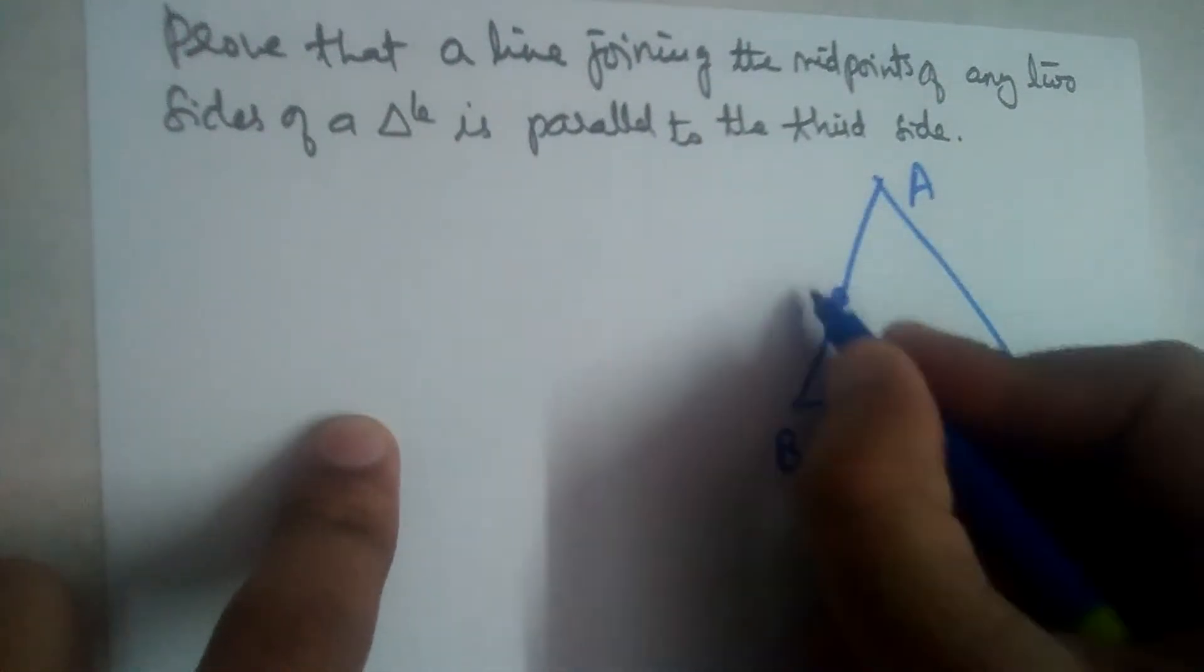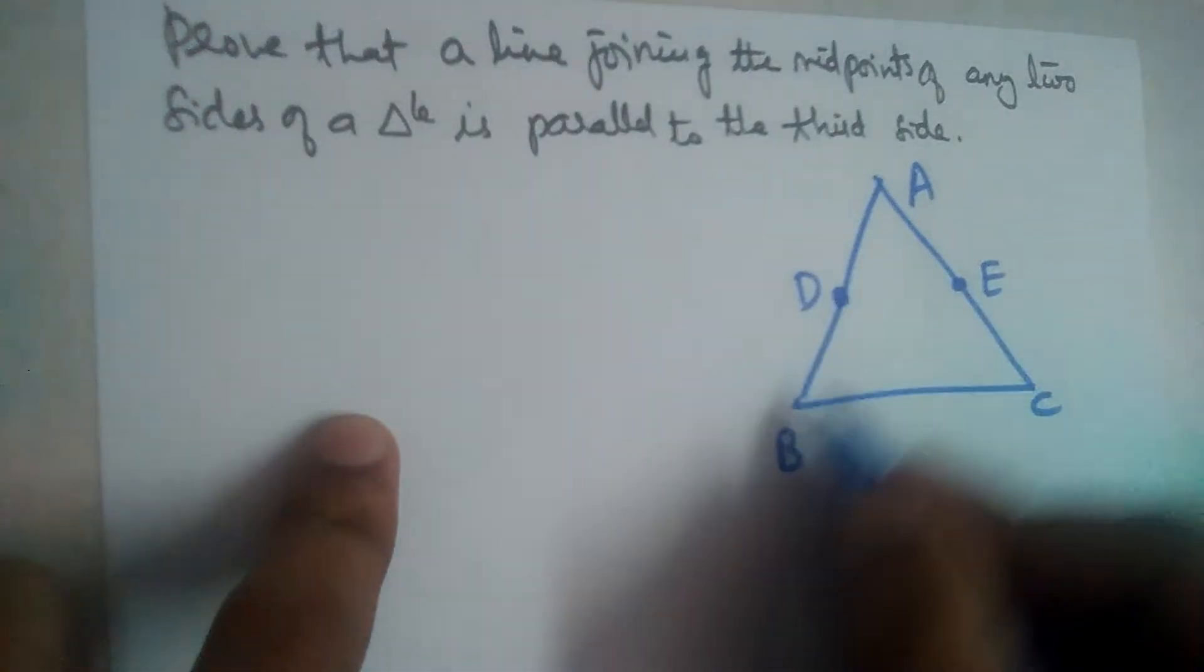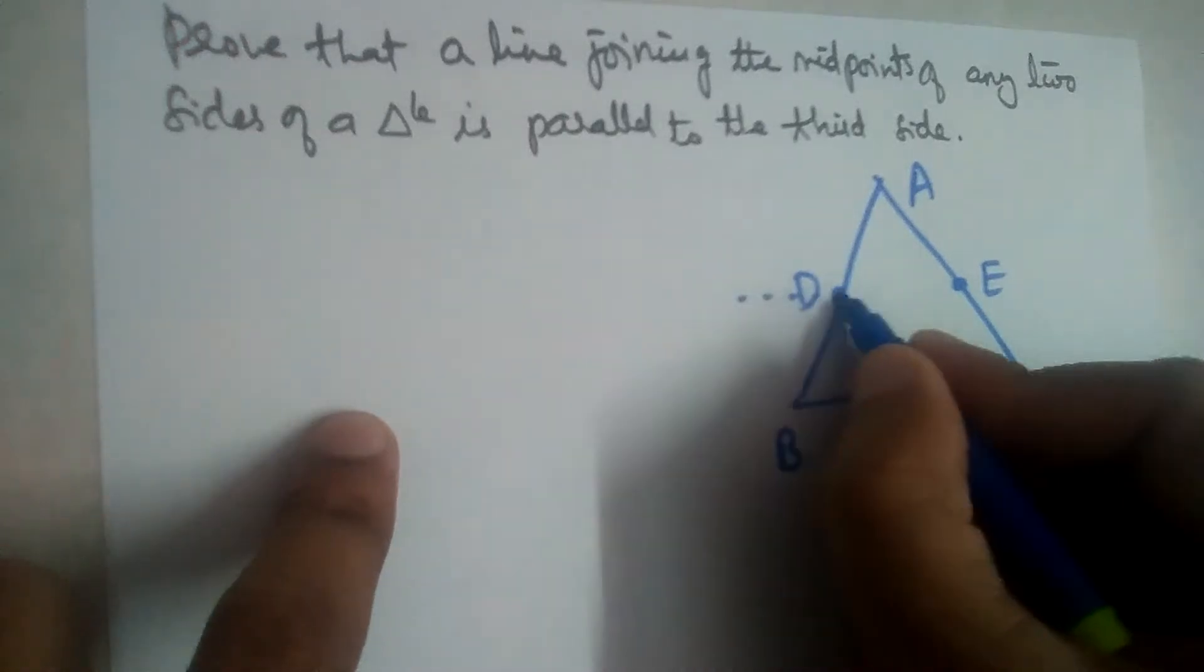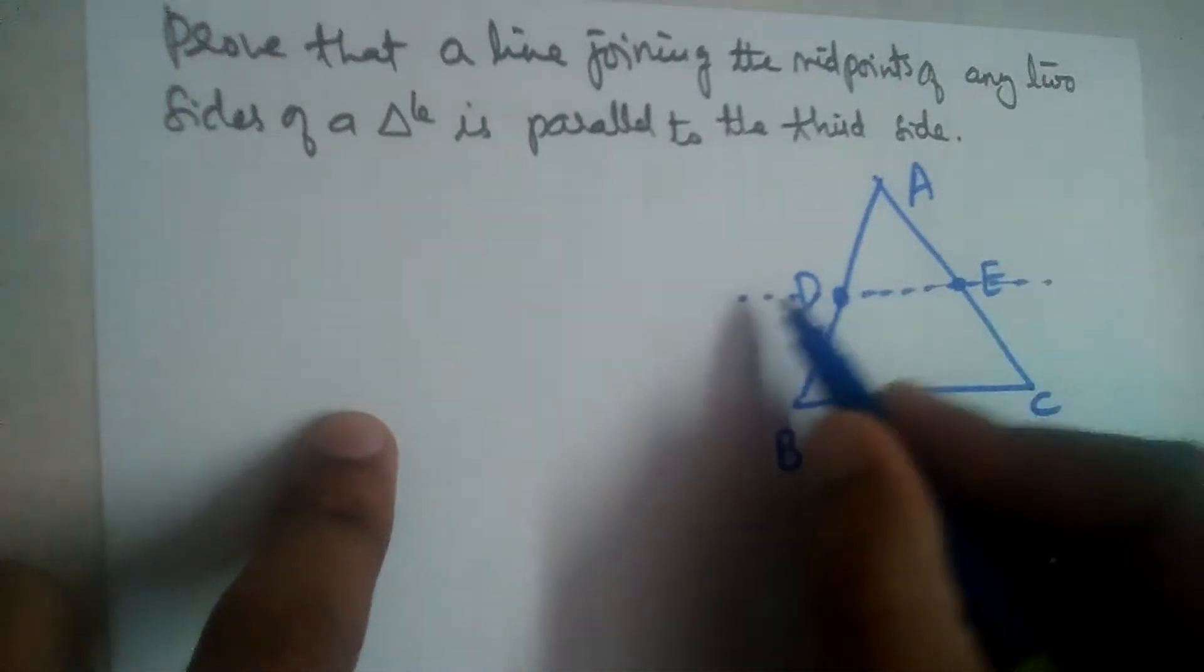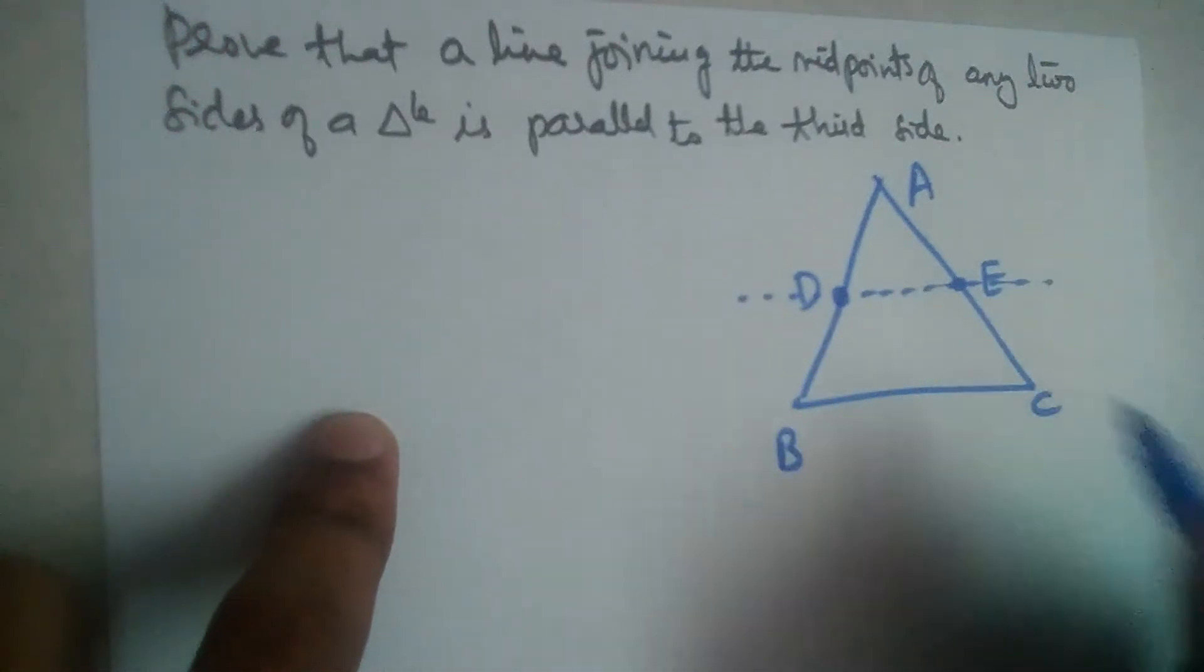Let D and E be the midpoints of AB and AC respectively. We should prove that if a line is passing through these midpoints D and E, this line will be parallel to BC.